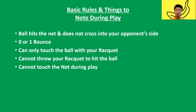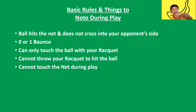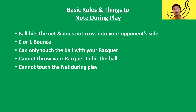Bonus rule talking about the net: you cannot hit the ball before the ball comes over the net into your court. Meaning, if you're at the net, the ball is super slow, you reach over and tap it — you lose the point. You cannot swing across the net to play the ball. It has to come over first.